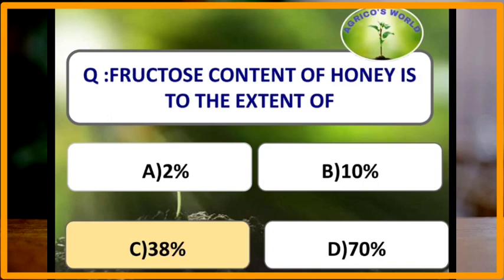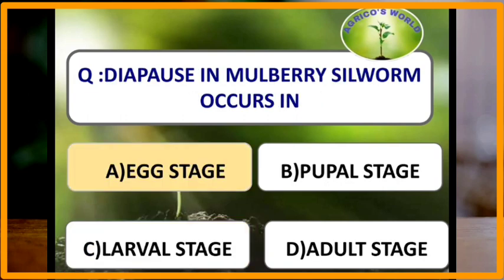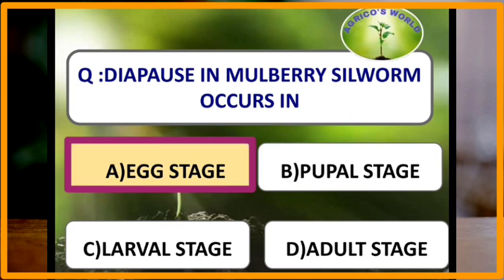Fructose content of honey is 38 percent. Diapause in mulberry silkworm occurs in the egg stage. Diapause is the period of arrested growth or development in the life cycle of insects, during which physiological processes like differentiation and reproduction are suspended.